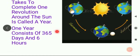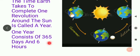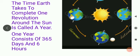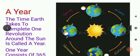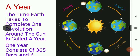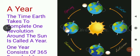So what is the time period for a year? One year consists of 365 days and 6 hours. To summarize: the time taken by the earth to complete one rotation around itself is a day, and the time taken by the earth to complete one revolution around the sun is a year, which has 365 days and 6 hours.